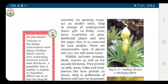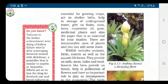Plants help in storage of underground water and give us fruits, nuts, and latex. Latex is a milky fluid found in many plants — the latex of the rubber tree is the source of natural rubber. Plants also provide turpentine oil, gum, and medicinal plants.